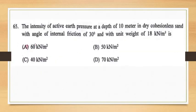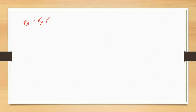The next question: the intensity of active earth pressure at a depth of 10 meters in dry cohesionless sand with angle of internal friction of 30 degrees and unit weight of 18 kN/m³ is — let us solve this. The intensity of active earth pressure is given as p_a = k_a × γ × z, where k_a is the coefficient of active earth pressure given as (1 − sin φ) / (1 + sin φ).